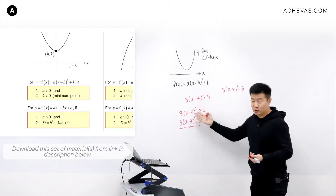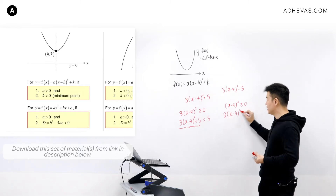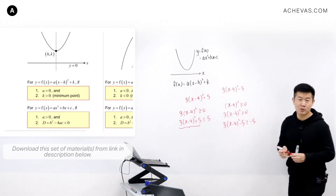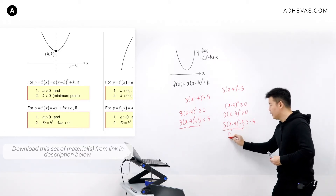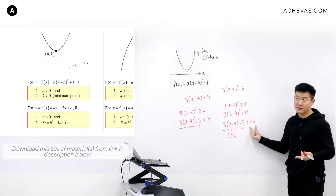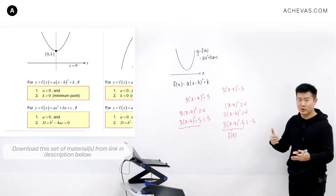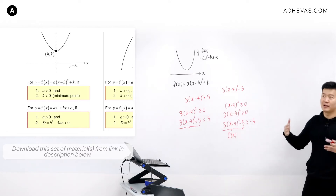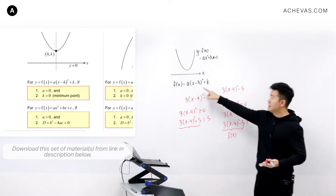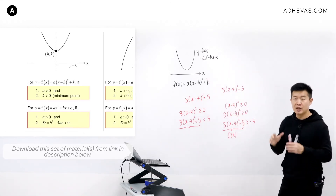Because (x minus 4) squared is bigger than or equal to 0, multiplying by 3 still gives bigger than or equal to 0, but subtracting 5 gives fx is bigger than or equal to minus 5. This means fx can be minus 2, minus 1, 0, positive 5, or positive 7 — it can be positive, zero, or negative. So we cannot say it is always positive, because it can sometimes be negative. That is why a must be positive and k must be positive after completing the square to verify a quadratic expression is always positive.